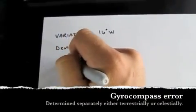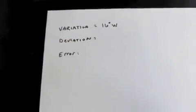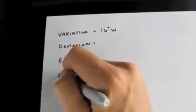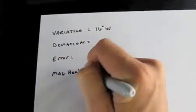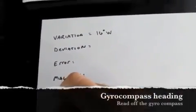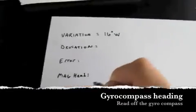The gyro compass error is calculated by the navigator a few different ways outside the purview of this exercise. Magnetic heading is read right off the magnetic compass and the gyro compass heading is read directly off the gyro compass as well.